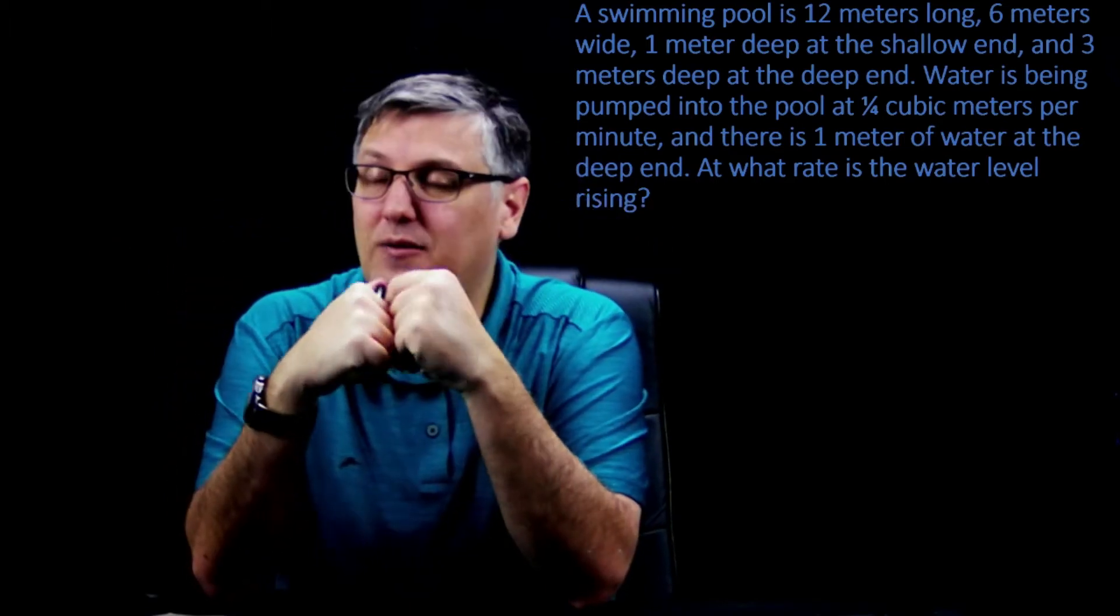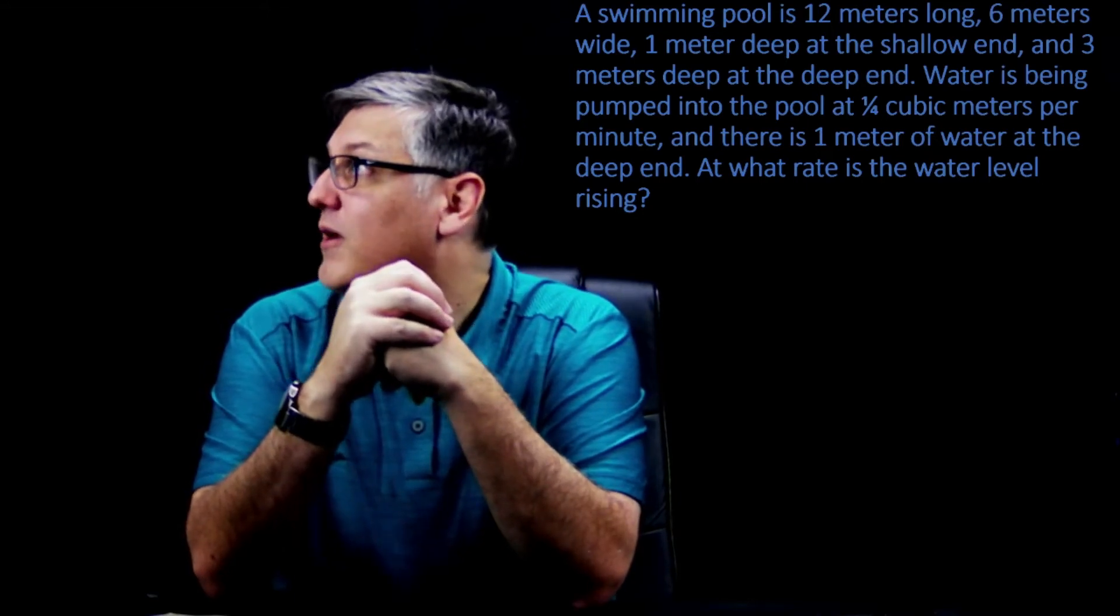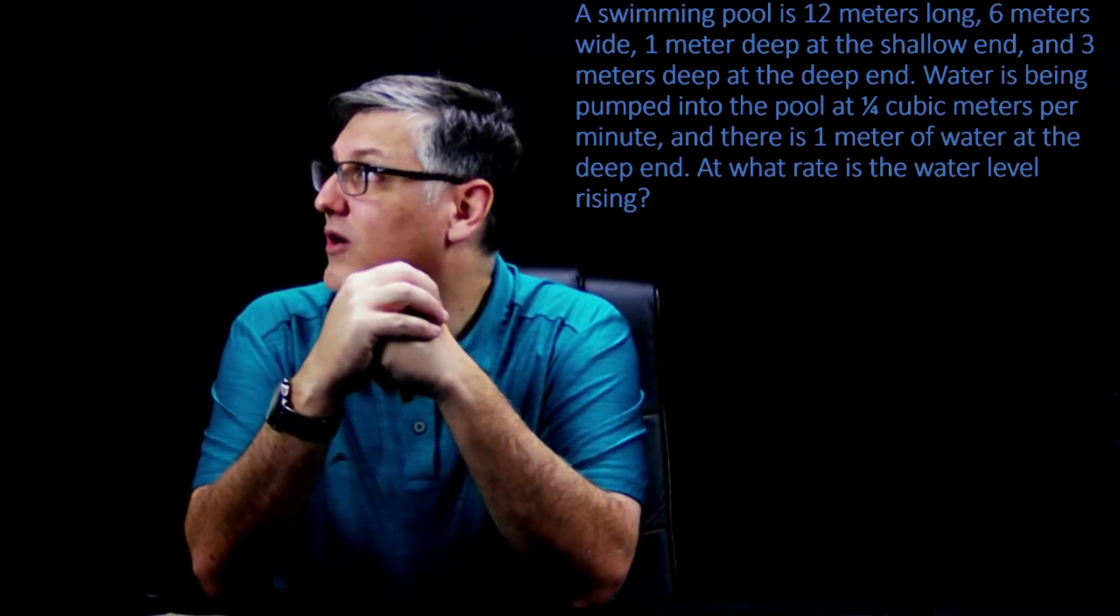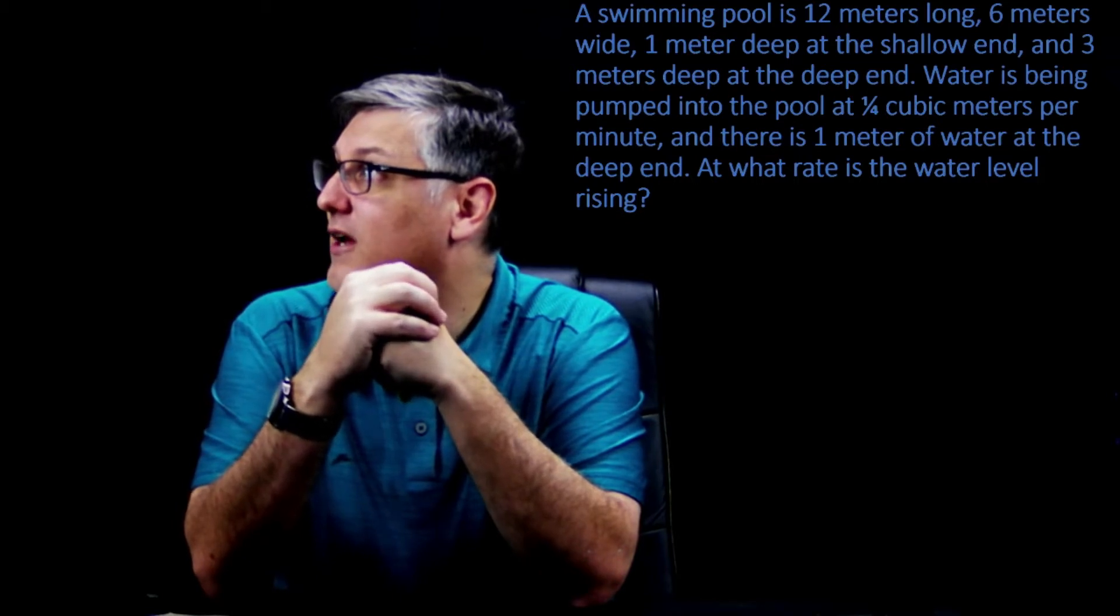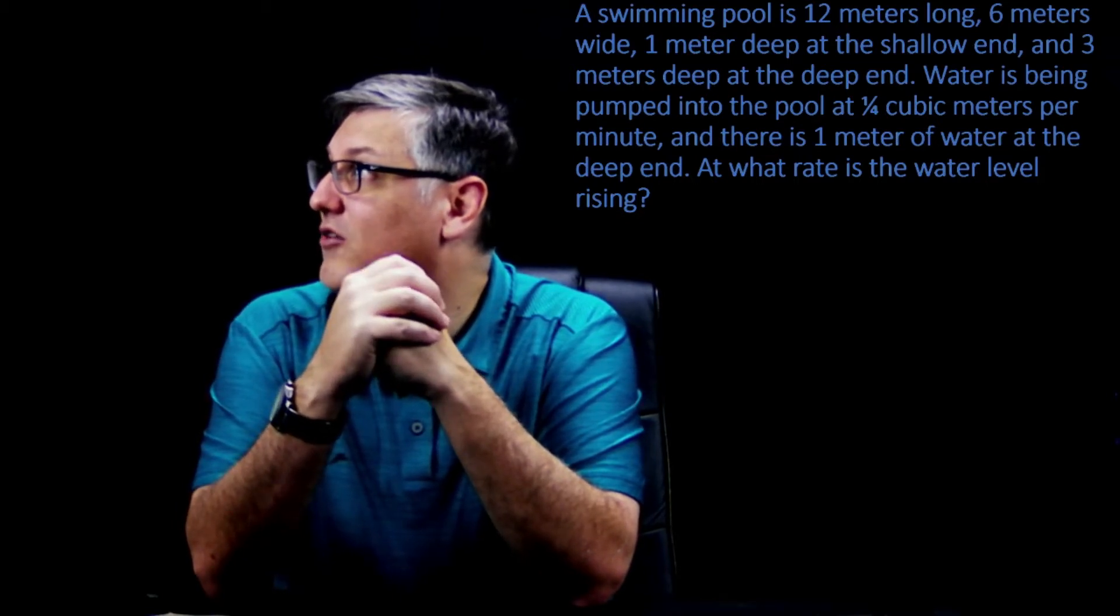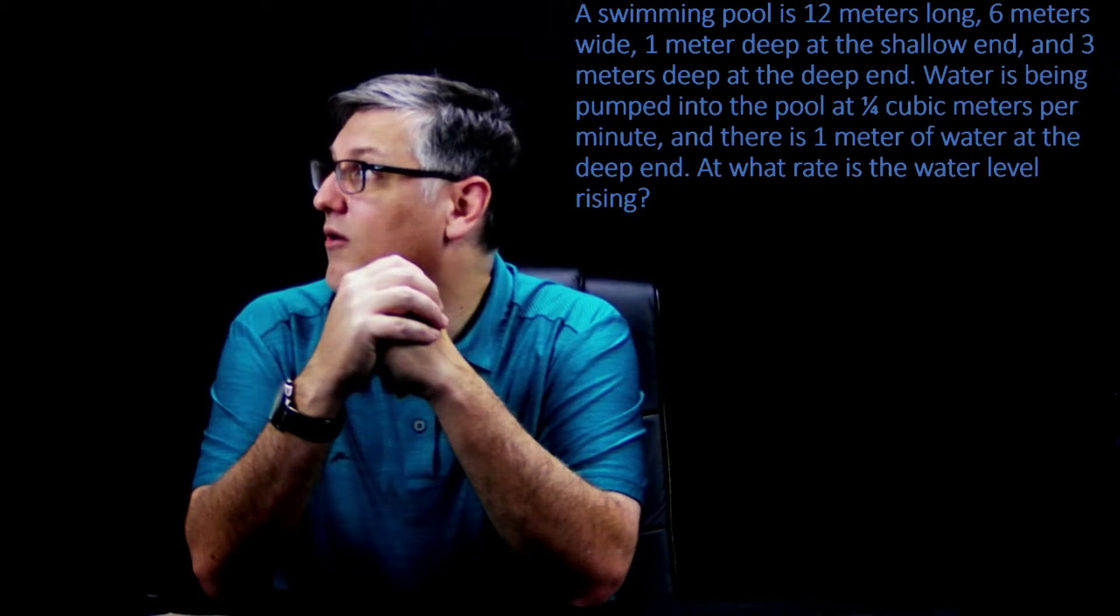It's not that bad. I'm just working the calculus part of it. This says a swimming pool is 12 meters long, 6 meters wide, 1 meter deep at the shallow end, and 3 meters deep at the deep end. Water is being pumped into the pool at 1/4 cubic meters per minute, and there is 1 meter of water at the deep end. At what rate is the water level rising?